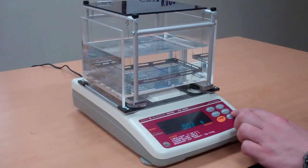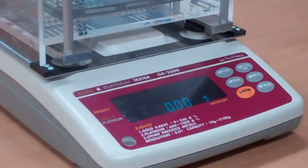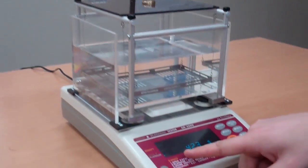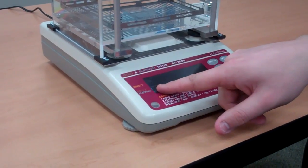So then we zero it out and we put the item on the top. Once the weight is stable, a little circle will come up.